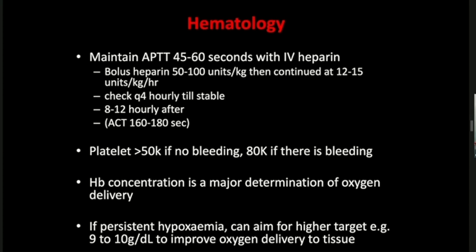We have ECMO heparin infusion nomograms. The APTT target is 45 to 60 seconds, approximately 1.5 to 2 times the upper limit of the APTT range. The initiation dose is 50 to 100 units per kilogram, given at the time of ECMO cannulation. We continue at a maintenance dose and check APTT every 4 hours initially. Once stabilized, we reduce the frequency of checking because frequent adjustments lead to a lot of APTT fluctuation.